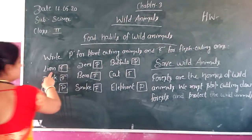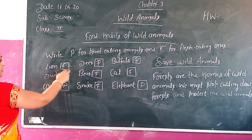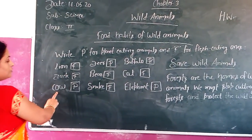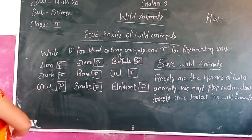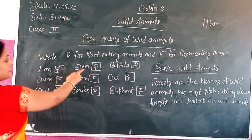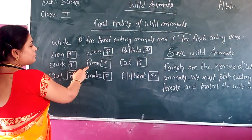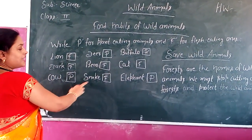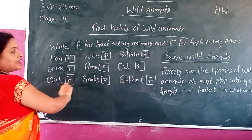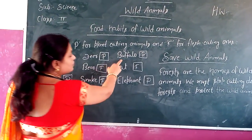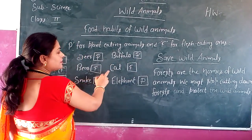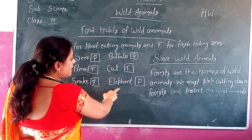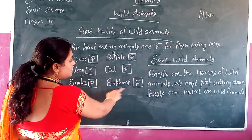Lion: F. Duck: F. Cow: P. Deer: P. Bear: F. Snake: F. Buffalo: P. Cat: F. And hen: P.